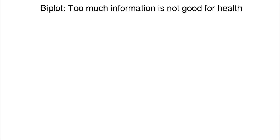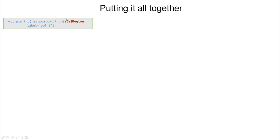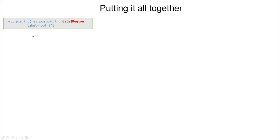Another way to represent both observations and variables at the same time is called the biplot. I don't recommend it much because it can be too much information in one diagram. The idea is that you plot both the scores and the loading directions. If you use labels instead of numbers, you might extract some information, but sometimes it's quite messy.